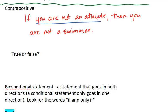Where you are not an athlete is the hypothesis, and you are not a swimmer is the conclusion. Let's assume the hypothesis is true. You are not an athlete. Does that mean that you are not a swimmer? And we see it does.